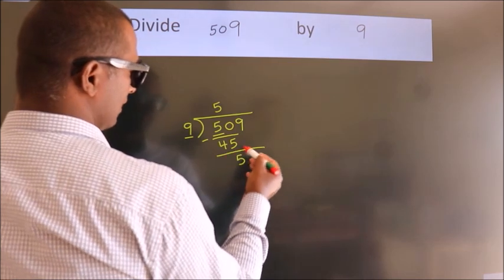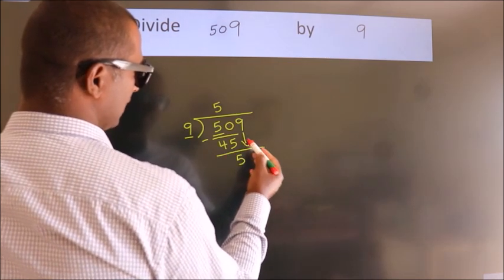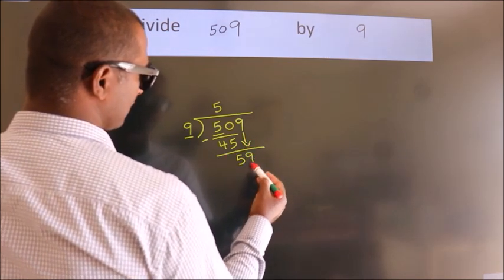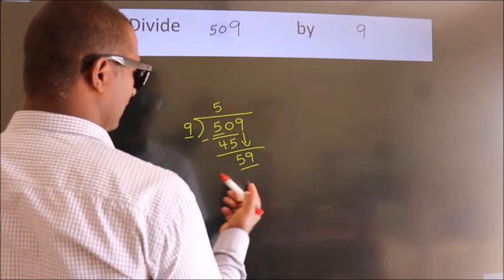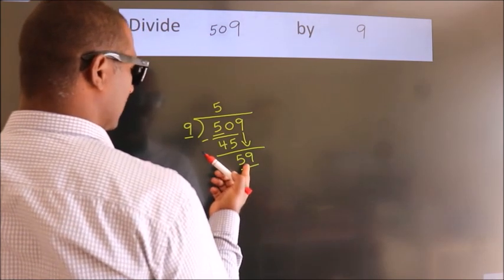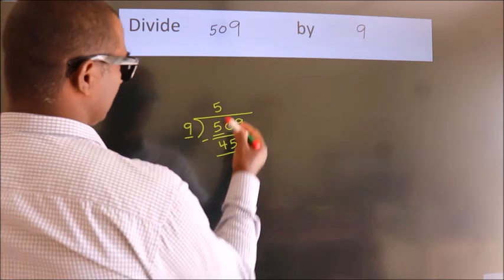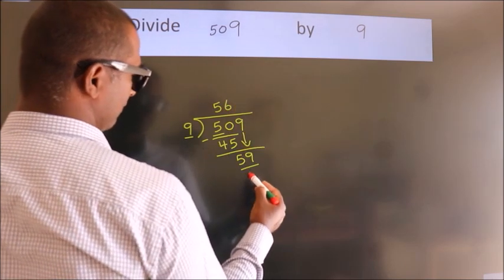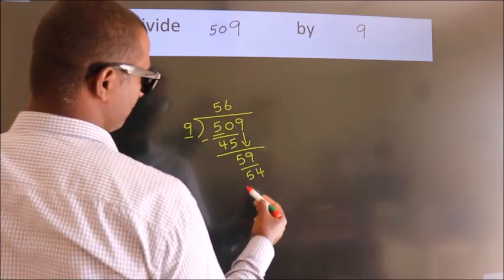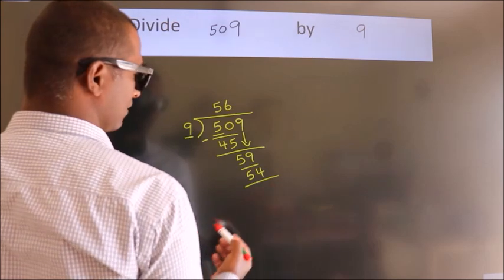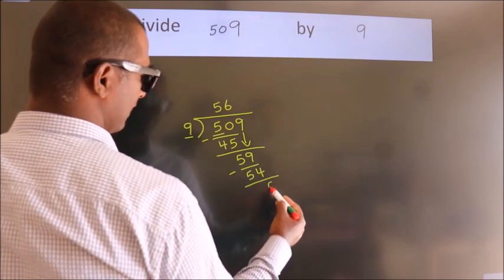After this, bring down the beside number. So, 9 down, so 59. A number close to 59 in the 9 table is 9 times 6, 54. Now we subtract and we get 5.